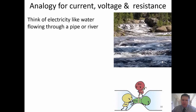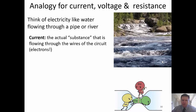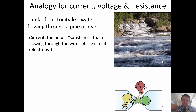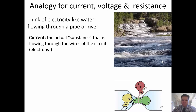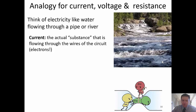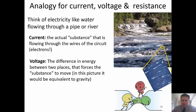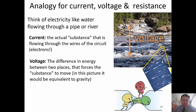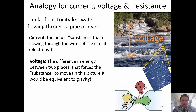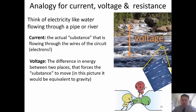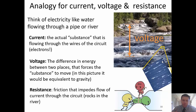These ideas can be a bit abstract, so if we think about electricity like water flowing through a pipe: current is the substance that's actually flowing — in water it's water, in electricity we call that substance electrons. Voltage is the difference in energy between two places — the force pushing the substance. In water, that's gravity; in electricity we call it voltage or potential difference.